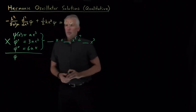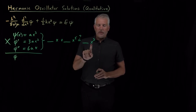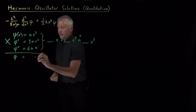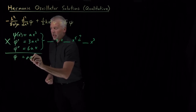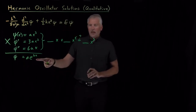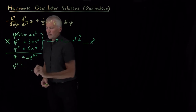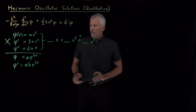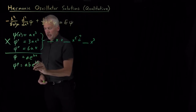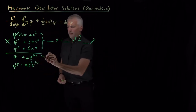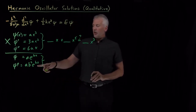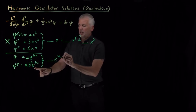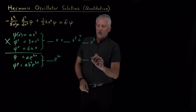Part of the problem was that the second derivative kept knocking down the power of x. We want the function to eventually equal the original. We know some functions whose powers don't get knocked down when we take derivatives — exponentials. For a function like ae^(bx), the first derivative just pulls down a factor of b, and the second derivative pulls down another factor of b, so ψ'' equals ab²e^(bx).